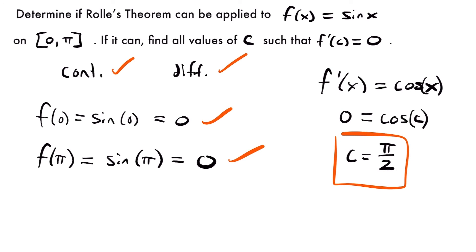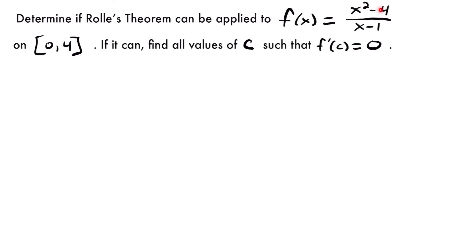For the last example, we check Rolle's theorem for f(x) = (x² - 4)/(x - 1) on the interval from 0 to 4. This is a rational function — a big red flag. We ask: what value makes the denominator 0? Setting x - 1 = 0 gives x = 1, so the function is undefined at x = 1, meaning it's not continuous there.